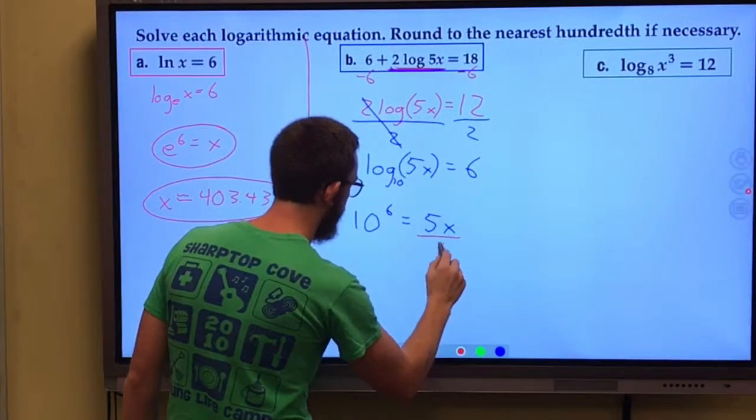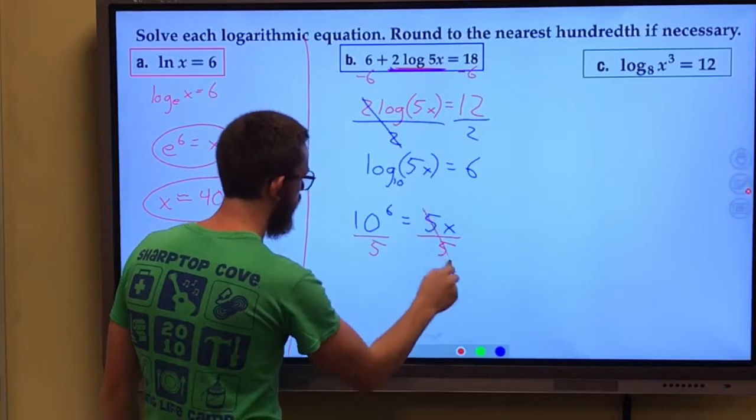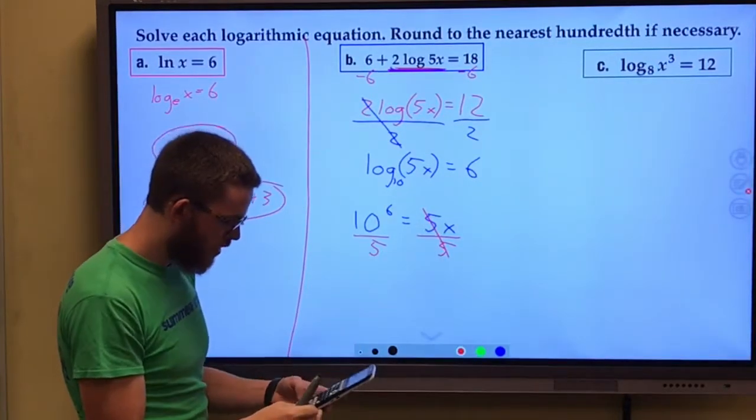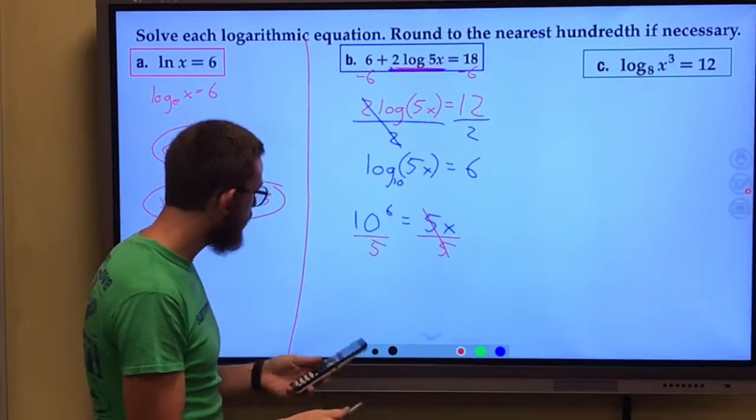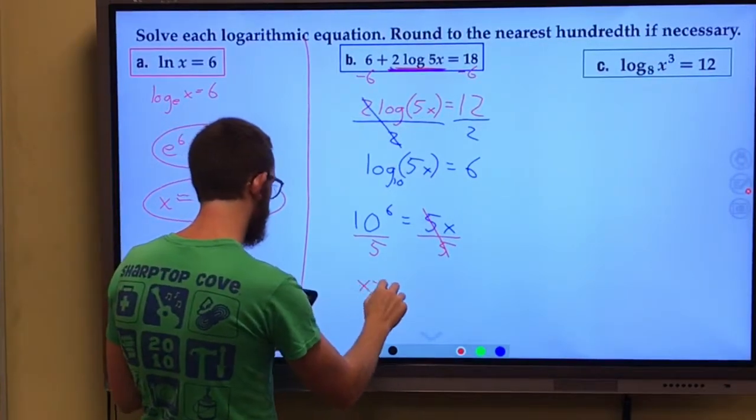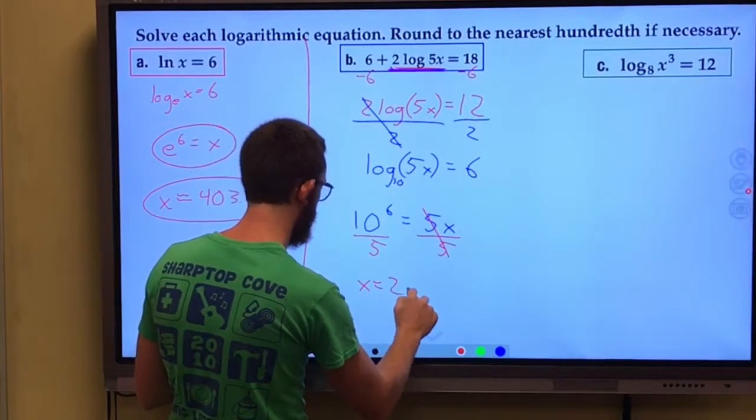We can now divide both sides by five. If you can't do this in your head, you can type it into the calculator, ten to the power of six, divide by five, and x comes out to be 200,000.